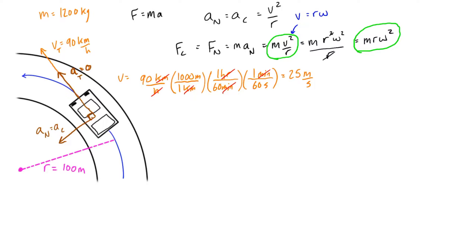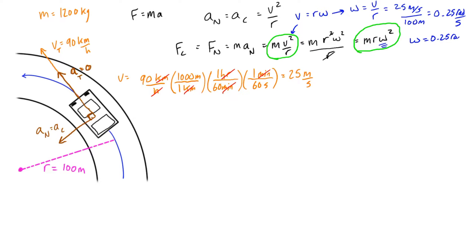Let's also use the expression relating tangential velocity to angular velocity, since we'll need it. Using v = rω, rearranging gives ω = v / r = 25 meters per second / 100 meters = 0.25 radians per second. So ω = 0.25 rad/s.